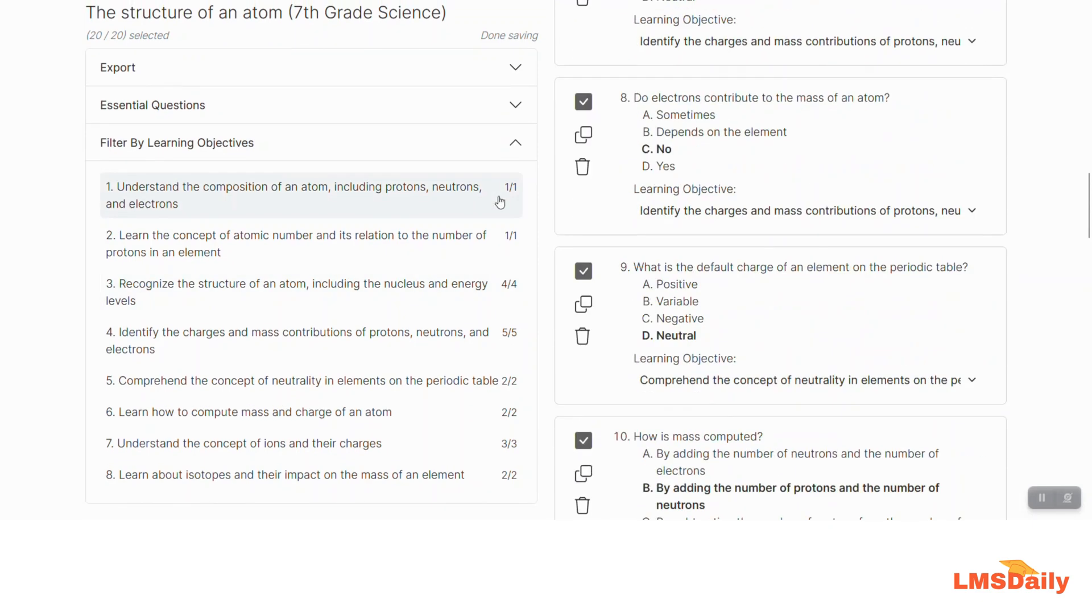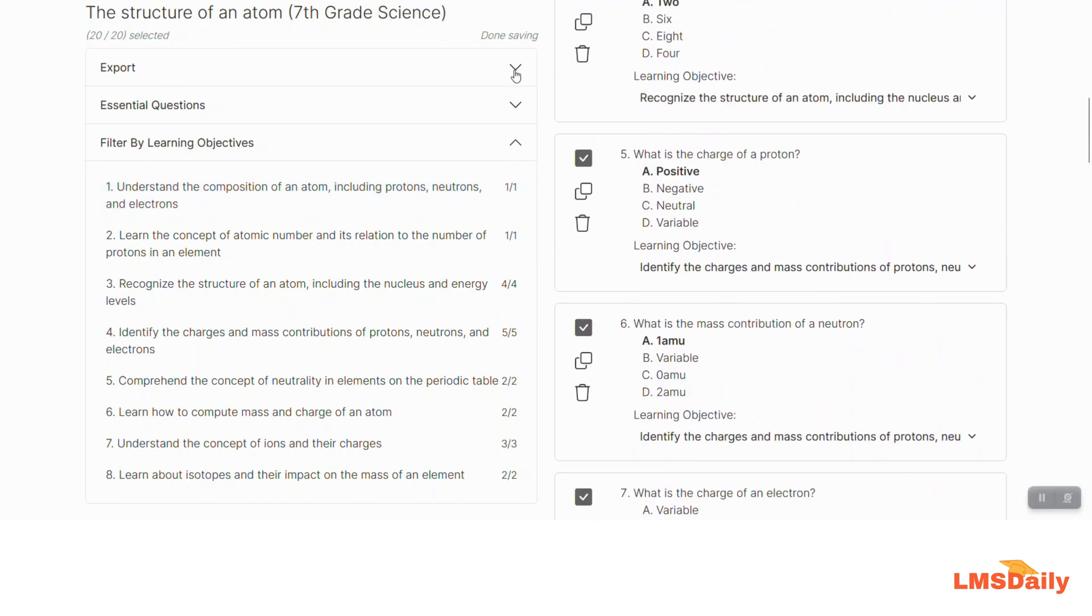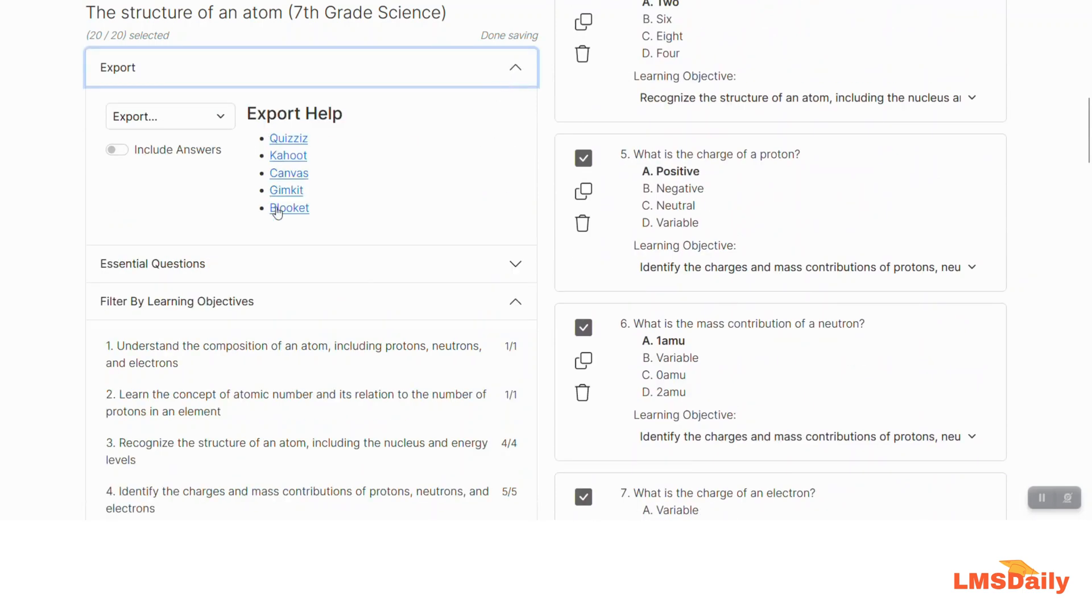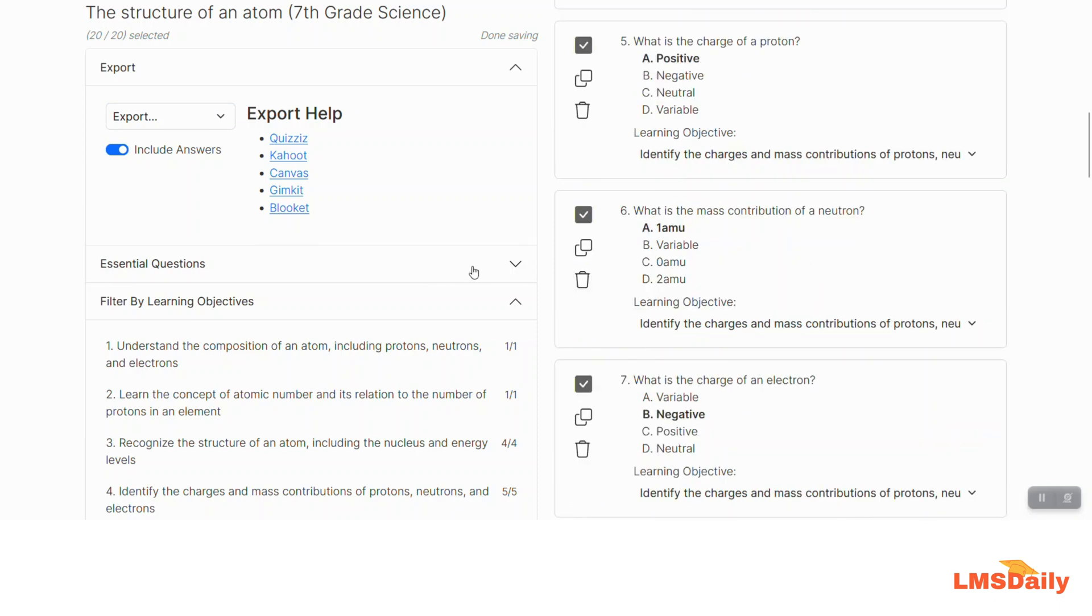To export these questions, expand the Export section and choose the platform you want to export to. For Quizizz, you can export to an Excel file, and similarly for Kahoot. If your platform isn't listed, you can export as a Docs file and later import it into your platform. You can also include answers by checking this box.